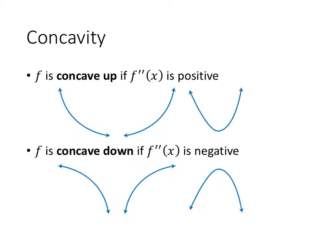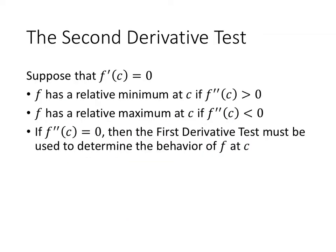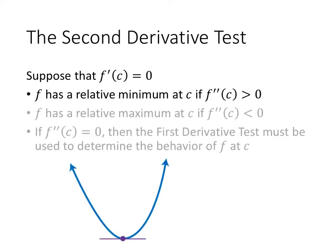So the first derivative tells us about the increasing or decreasing behavior of our function. The second derivative tells us about what we call concavity. A function is concave up if f double prime of x is positive, and concave down if the second derivative is negative. The second derivative is also useful for testing for extreme values — local maximum or local minimum values. The second derivative test is easier to use than the first derivative test in many instances. If we have a critical point where the derivative is zero and the second derivative is positive, the function is concave up at that point, and that tells us we have a relative minimum.